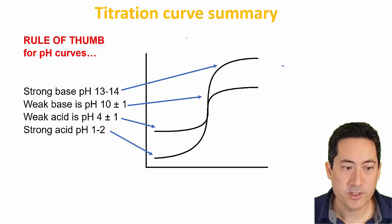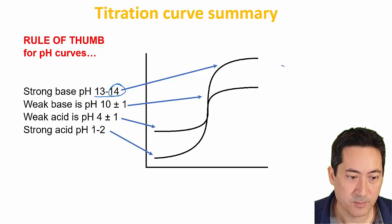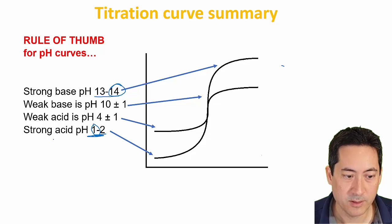So just a summary of titration curves here. When you hear strong base, think about pH 13 to 14, so 14 is the max. Strong acid, 1 to the max, so about 1 to 2, ignoring super acids and so forth, just as a general rule of thumb.